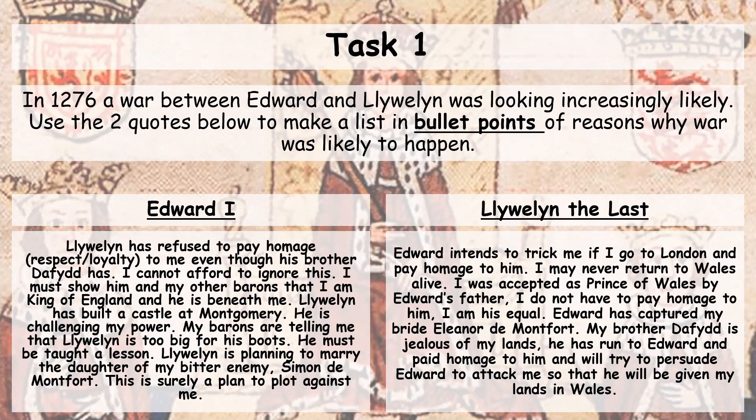For example, Edward says Llewellyn refused to pay homage to him, which means respect or loyalty. But Llewellyn's brother has already paid loyalty to Edward, while Llewellyn is refusing. That could be one reason. Read through and make these bullet points. Pause the video and go and do that task.